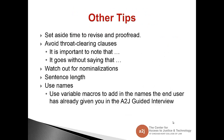Some other tips: make sure to set aside time to revise and proofread. Avoid throat-clearing clauses — you don't need to say 'it is important to note that' or 'it goes without saying that'; just say it. Watch out for nominalizations — zombie nouns that suck the life out of adjectives and cannibalize active verbs. For example, instead of 'the company was in violation of the statute,' just say 'the company violated the statute.' Watch your sentence length — Brian Gardner says the maximum should be 20 words. And use names: use variable macros to add in the names the end user has already given you in the A to J guide interview, so you can refer to the appellant, defendant, or pro se litigant by name.